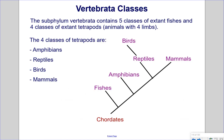The subphylum Vertebrata contains five classes of extant fishes and four classes of extant tetrapods — animals with four limbs. Tetra means four, pods means feet. The four classes of tetrapods are amphibians, reptiles, birds, and mammals. Note that birds share a closer common ancestor with reptiles than with mammals. Even though both birds and mammals are warm-blooded, birds evolved from reptiles, as evidenced by their modified scales, which are their feathers.